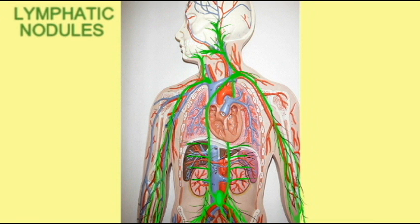In addition to lymphatic vessels, there are a number of lymphatic tissues throughout the body. There is diffuse lymphatic tissue, a little of which can be found in almost every organ.